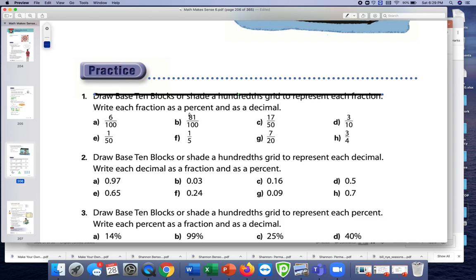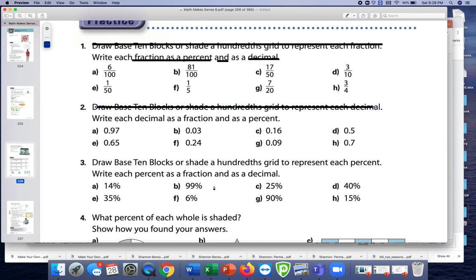But really what I want you to do is just write each as a, write each fraction as a percent and as a decimal. Same thing for this. You do not have to do the shading of the hundred grid unless you really want to. Same thing for this, unless you want to just do them all as a fraction decimal. And that's when you're going to do fraction and percent.